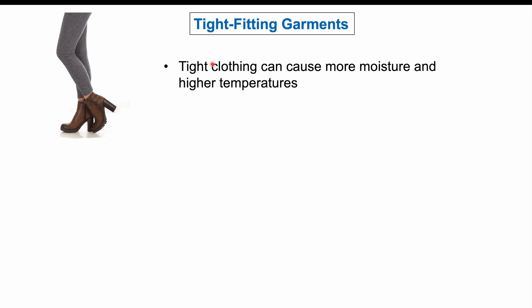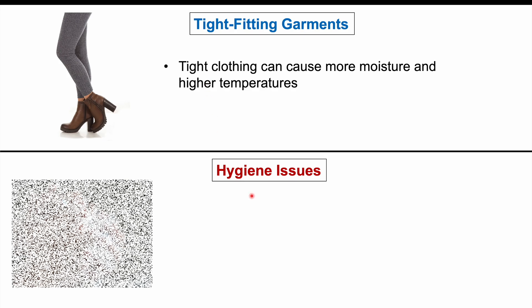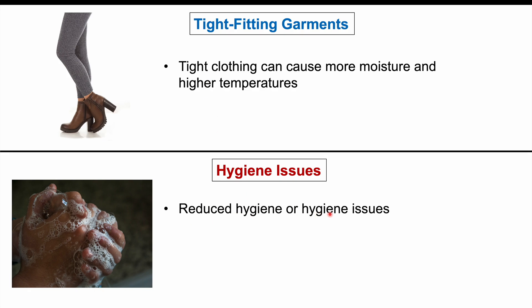Another risk factor is tight-fitting garments or tight-fitting clothing. Tight clothing can cause more moisture and higher temperatures, which can promote the growth of candida in the vaginal cavity — especially clothing that is non-breathable. Hygiene issues are also a risk factor. Reduced hygiene or practices like douching can increase the risk of a yeast infection, as douching can alter and disrupt the vaginal flora, disrupting the normal protective microbes. Toilet wiping in the wrong direction can also spread candida or other harmful bacteria toward the vaginal opening.